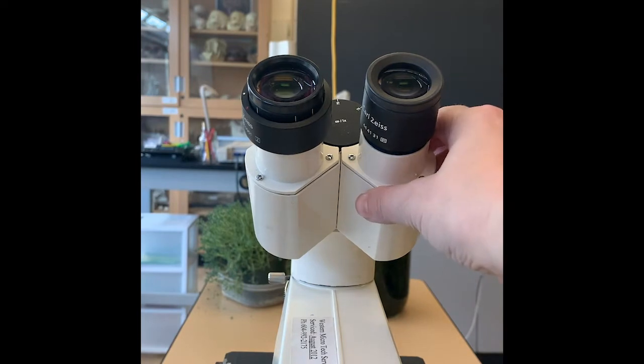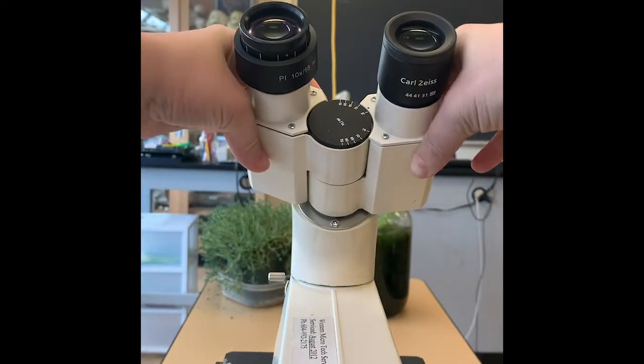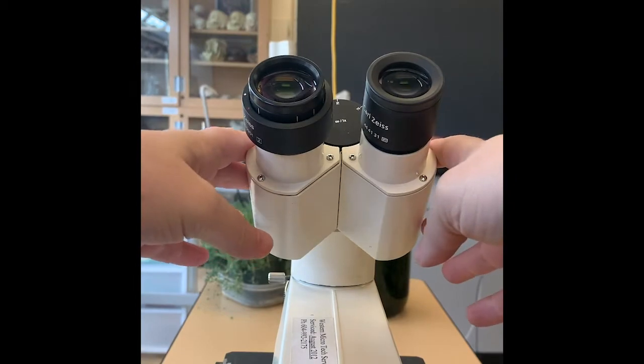When you first go to use the microscope, you will usually adjust these oculars so that when you look through them, you just see one circle of light.